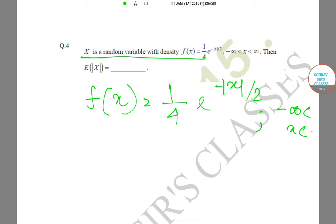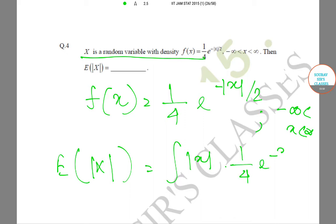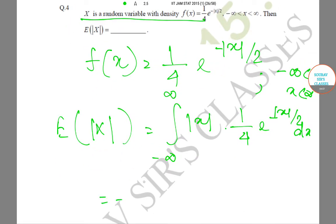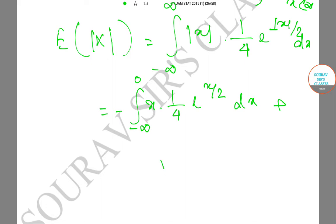Now, E[|X|] equals the integration of |x| multiplied by (1/4) e to the power minus |x|/2 dx, from minus infinity to infinity. For the lower part (minus infinity to 0), this becomes: minus x multiplied by (1/4) e to the power x/2 dx. And for 0 to infinity, the integration is x multiplied by (1/4) e to the power minus x/2 dx.